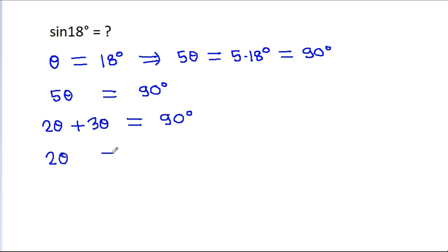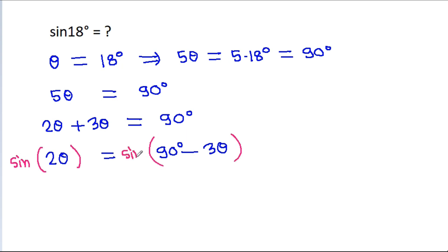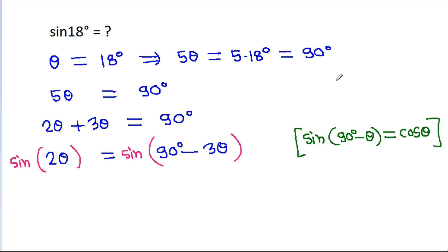So 2θ will be equal to 90 degrees minus 3θ. And if we take sin on both sides, then sin(90° - θ) is equal to cos θ. So sin 2θ is equal to sin(90° - 3θ), which equals cos 3θ.